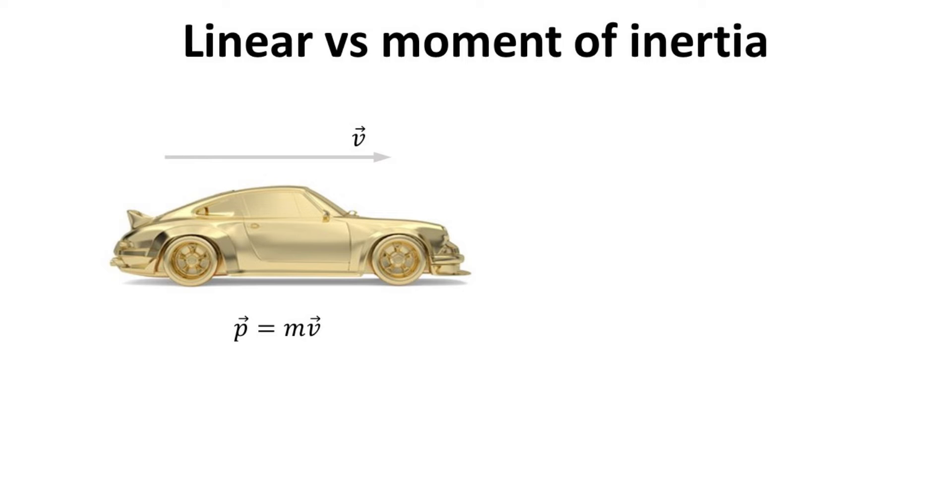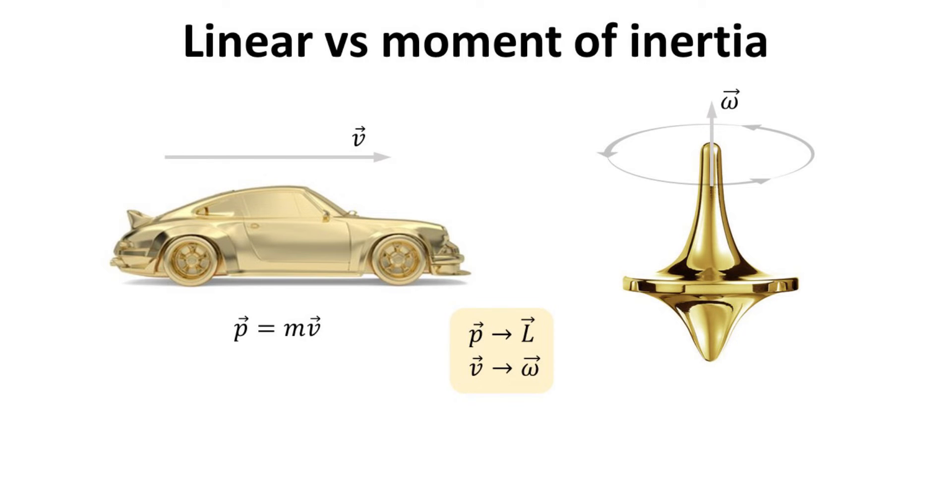Let's continue with more analogies with Feynman since it's been quite fruitful thus far. Consider the definition of linear momentum given by the product of its mass and velocity. For the mapping from linear to angular motion, the linear momentum maps onto angular momentum while linear velocity onto angular velocity. Then there should be a quantity that is analogous to mass in angular motion. Since mass is also known as inertia, let's denote this quantity as the moment of inertia I.